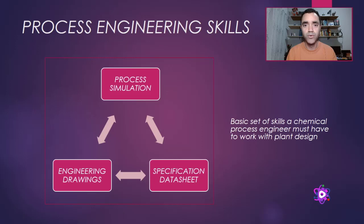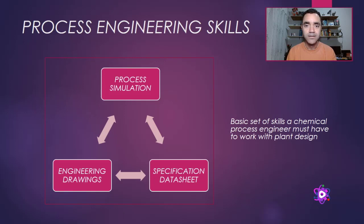For rotating equipment, we will have the mechanical design or specification and an electrical specification. If we are talking about static equipment, we will have only the mechanical specification together with the process conditions. These are the minimal requirements that you must have to work with plant design. Without that, you are not able to perform your roles as a chemical process engineer in plant design.